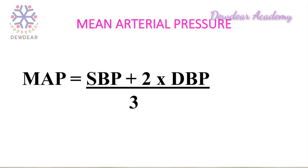Intracranial pressure (ICP) is the force that keeps blood out, or it is the pressure exerted by fluids such as cerebrospinal fluid inside the skull and on the brain tissue. Normal ICP is 5 to 15 millimeters of mercury.